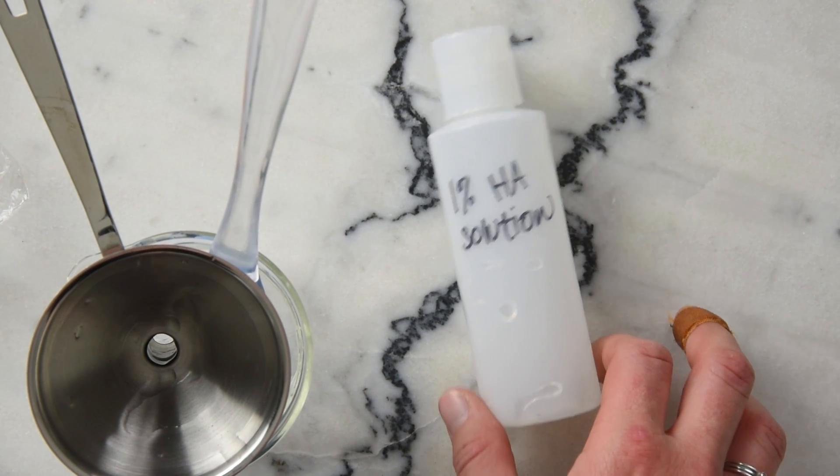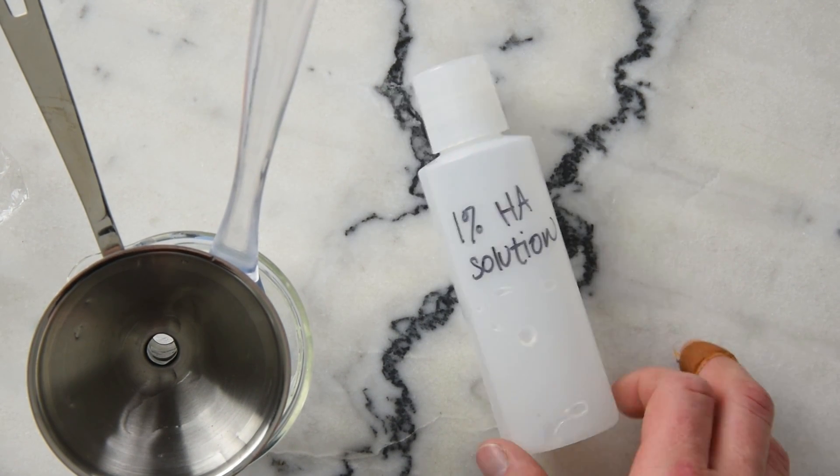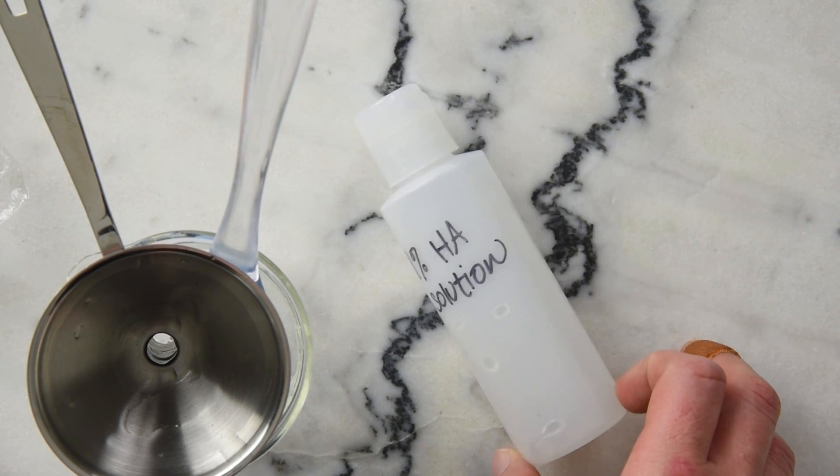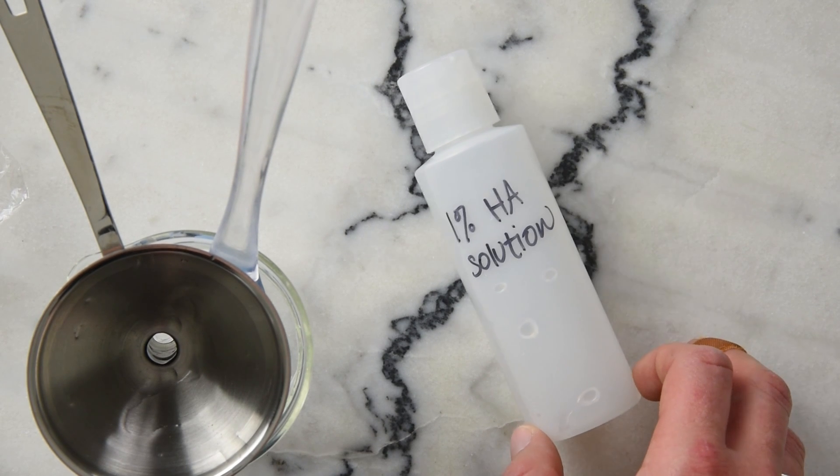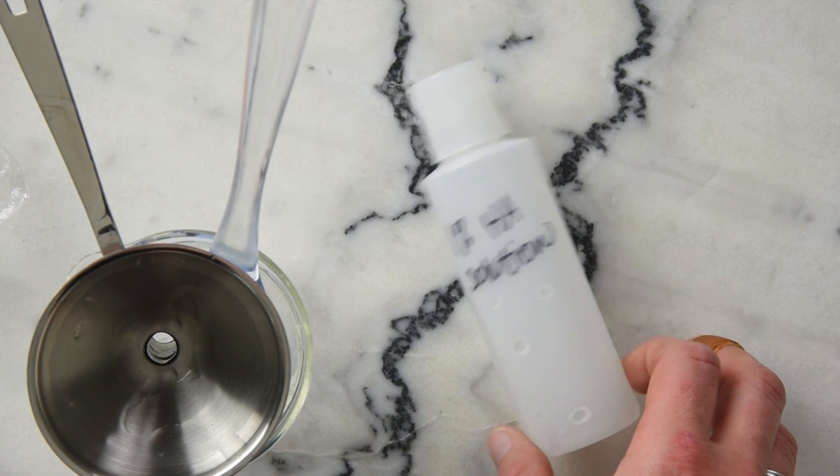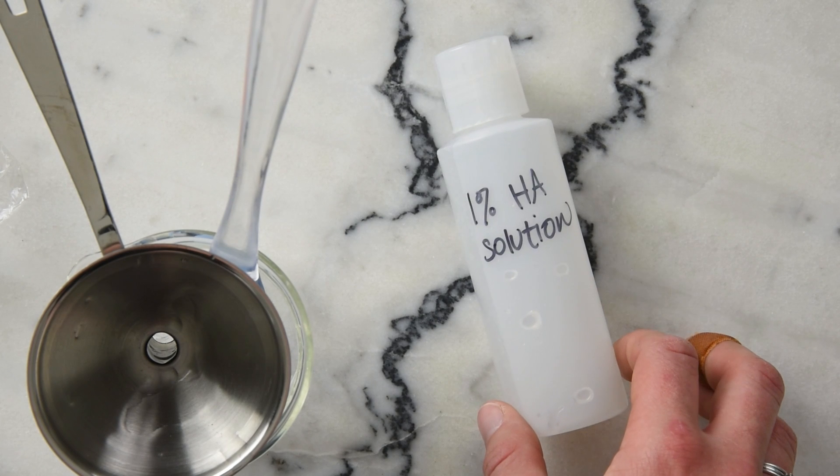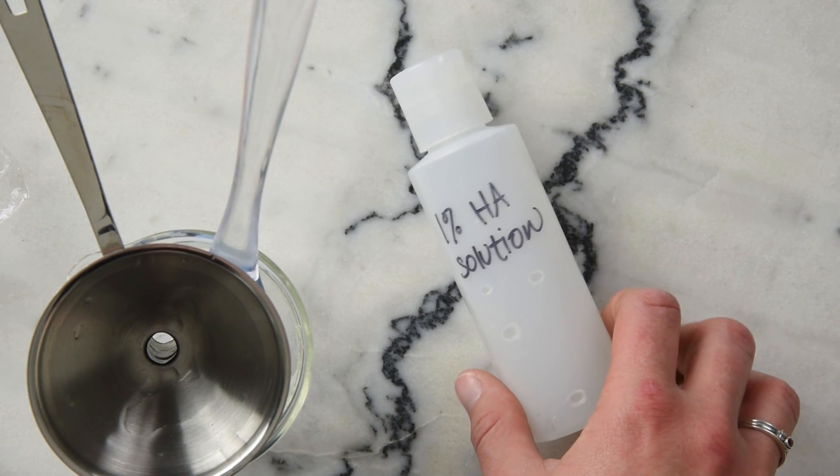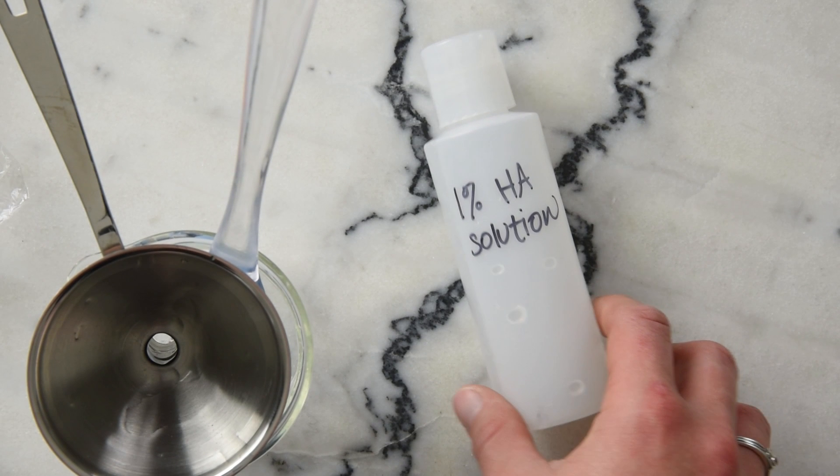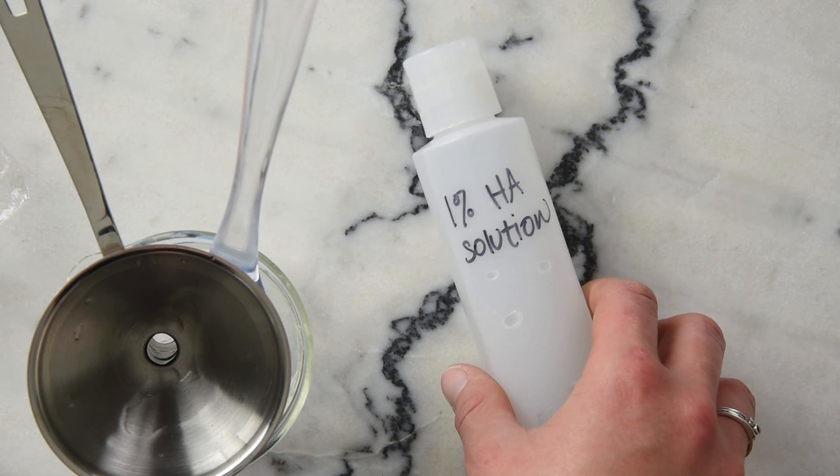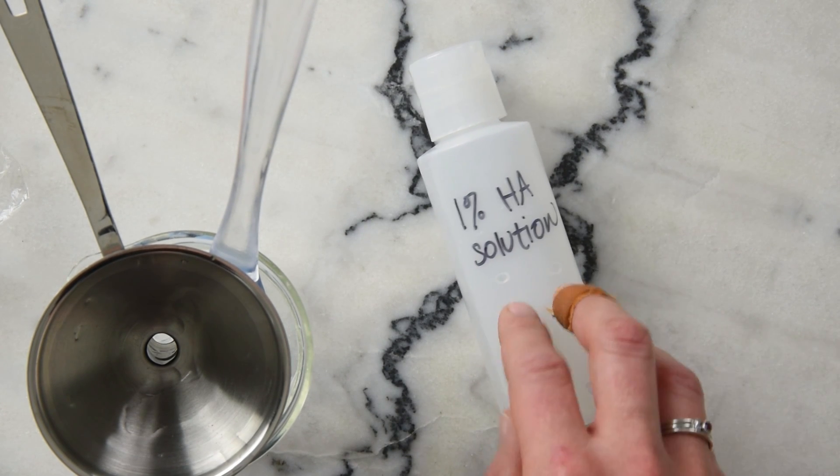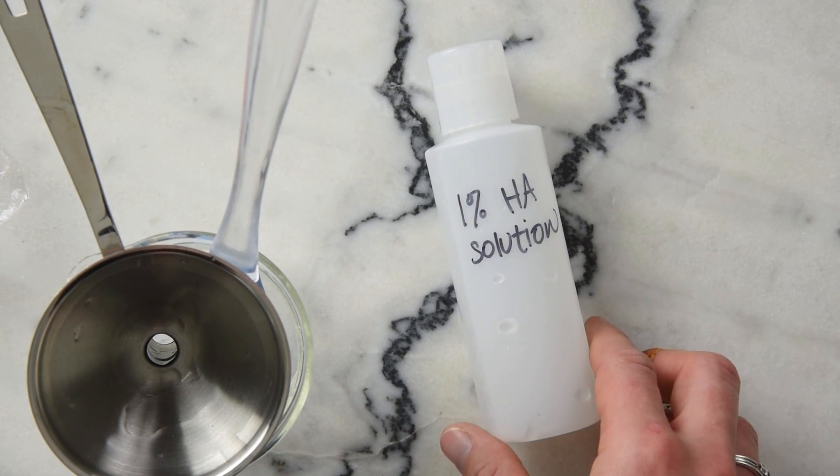There you go, you just made a 1% hyaluronic acid solution. Pretty simple, as you can see. You could use it like this as a hydrating toner, or stay tuned for more recipes where we'll be using this solution to make all kinds of awesome things. Thanks so much for watching, please subscribe, and remember to click through to the blog—I've got a whole research piece on hyaluronic acid that came out today. Happy making!